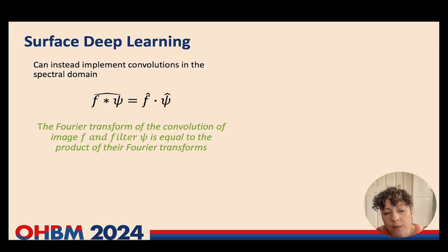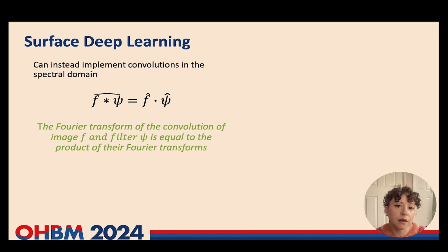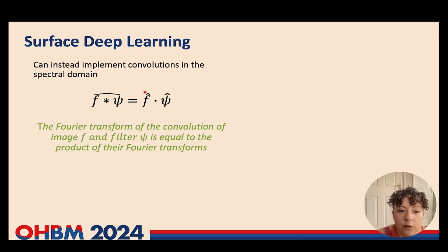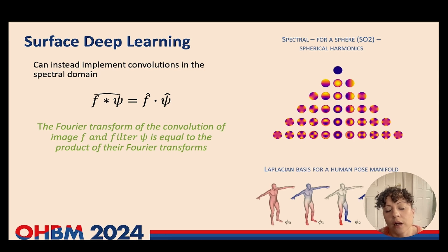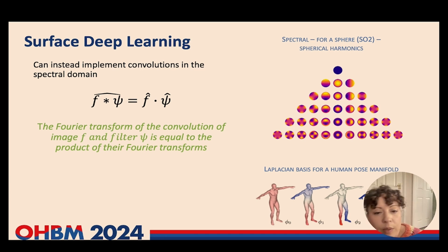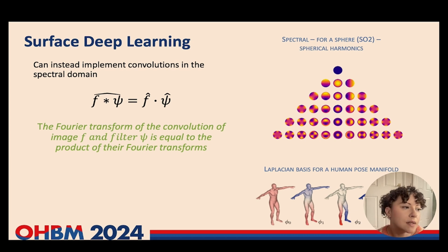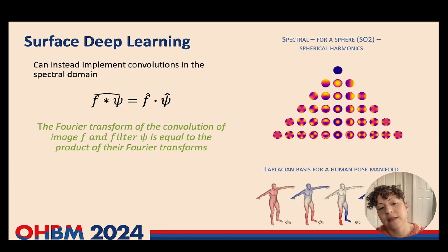The technically correct way to implement non-Euclidean convolutions is in the spectral domain, using the convolutional theorem which states that the Fourier transform of the convolution of an image and a filter equals the product of their Fourier transforms. We can generalise Fourier transforms to the domain of interest — using spherical harmonics for the sphere or the eigenvectors of the graph Laplacian for any generalised shape mesh. However, implementing convolutions this way is very computationally costly, and methods using these approaches implement approximations which lose filter expressivity.